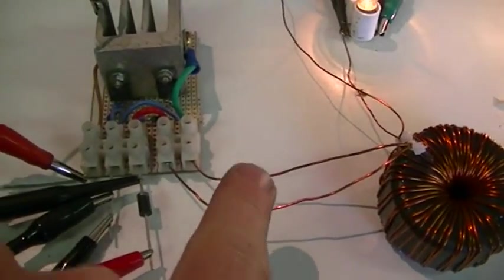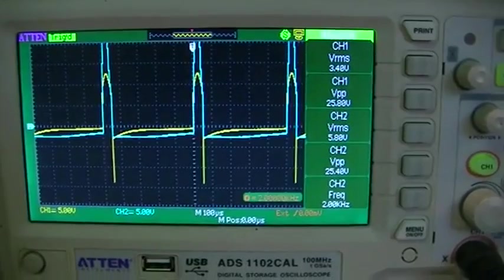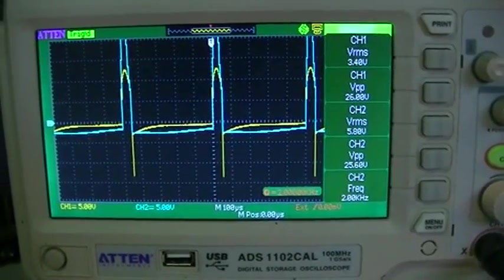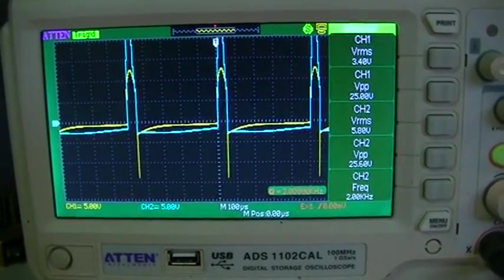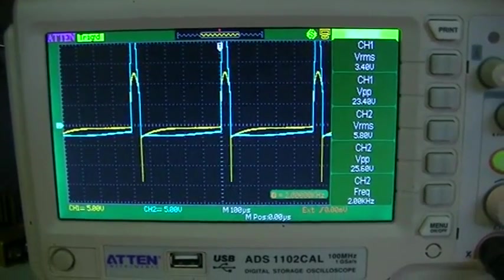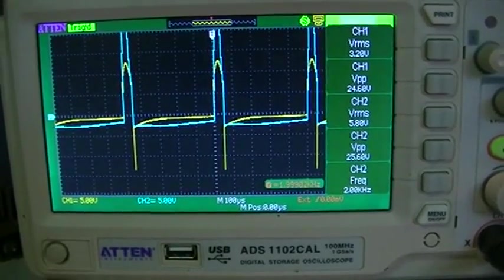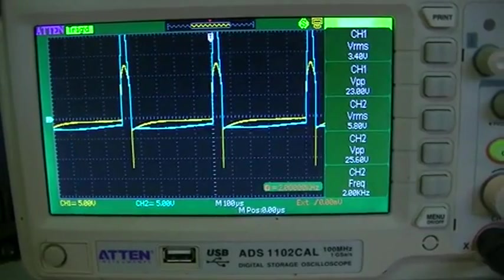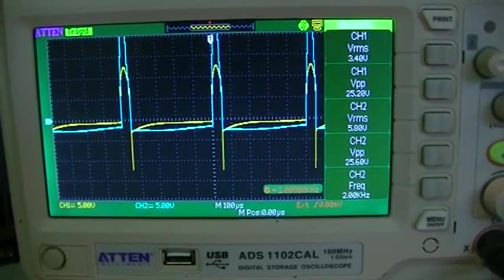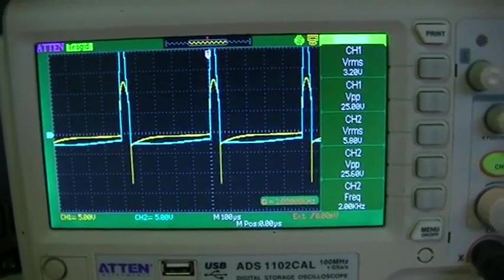Yeah, triggering off the primary coil to keep our scope traces nice and steady. Like I said, the yellow trace is across the secondary coil that's wound around the outside the core alongside the primary coil, and the blue trace is from our center winding. And as you can see, the results are far, far better.